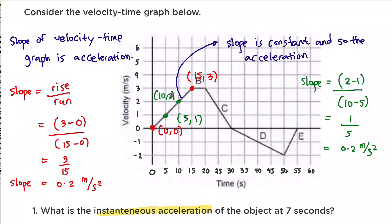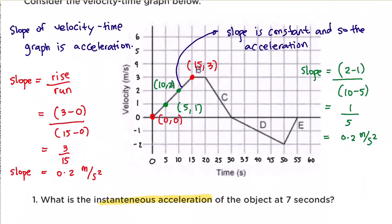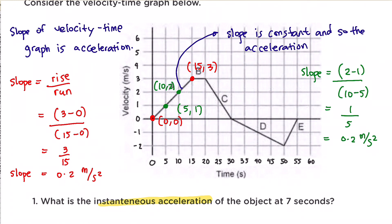So the slope of this part of the graph, which is the acceleration, is 0.2 meters per second squared. To answer the question — what is the instantaneous acceleration at seven seconds — seven seconds falls on that line, so the instantaneous acceleration is 0.2 meters per second squared. To solve questions like this, all you need to do is find the slope of the line on which that point falls.